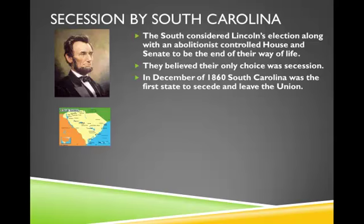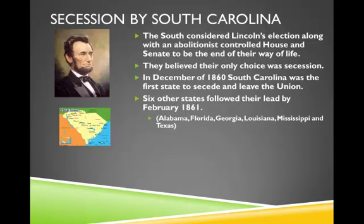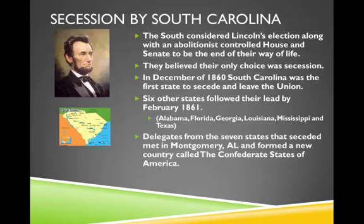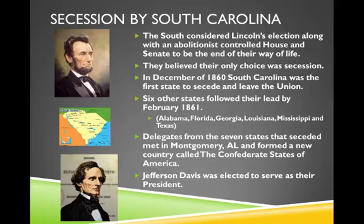In December of 1860, South Carolina was the first state to secede and leave the Union. They were followed by six other states within the next six months, and by February of 1861, Alabama, Florida, Georgia, Louisiana, Mississippi, and Texas had all seceded. Delegates from these seven states met in Montgomery, Alabama, and formed a new country called the Confederate States of America, electing Jefferson Davis as their president. They set up a government similar to the Articles of Confederation, where the majority of the power remained with the states.